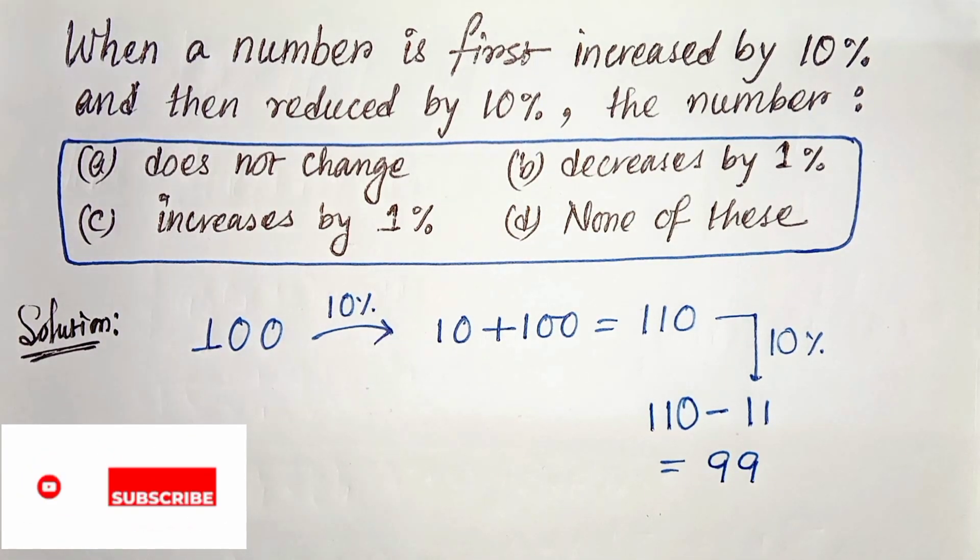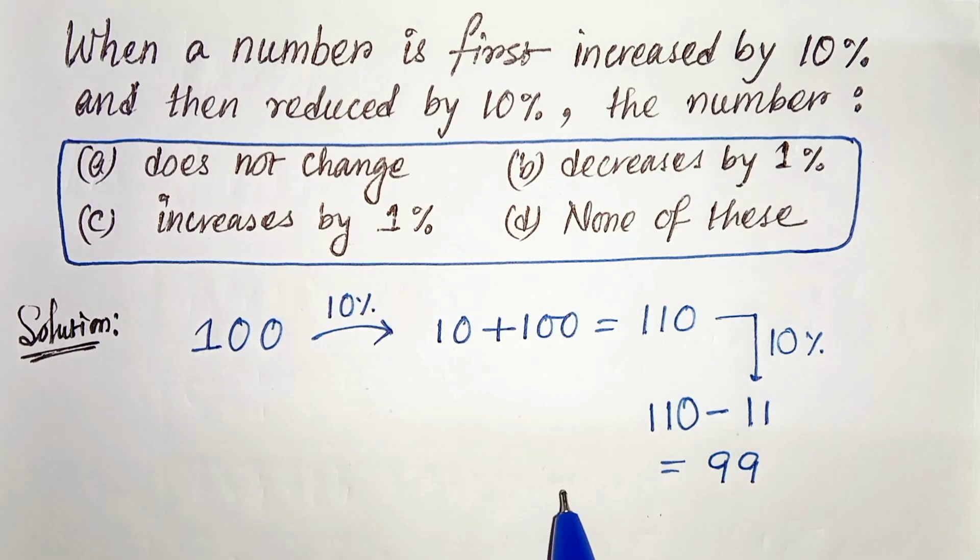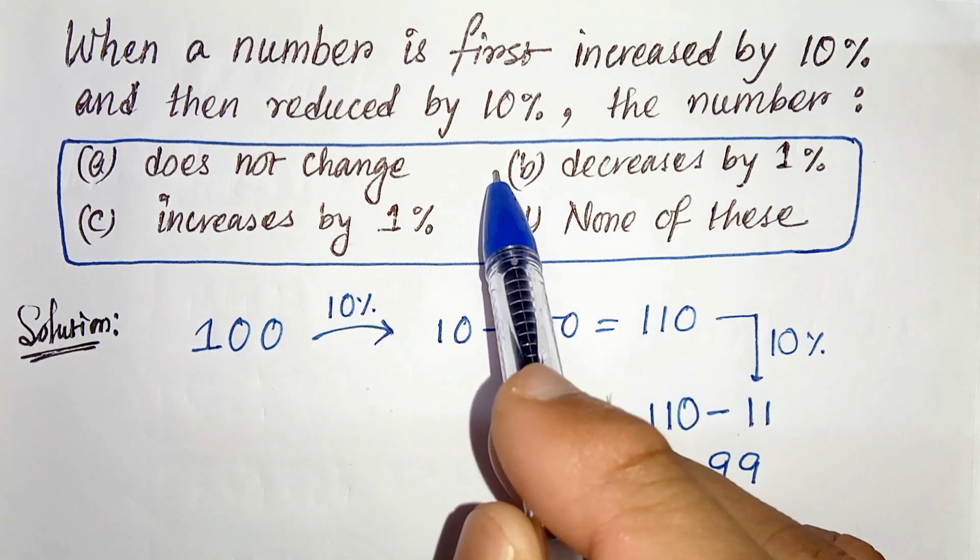So our number becomes 100 to 99, that is it becomes 1% less, so option B is the correct one.